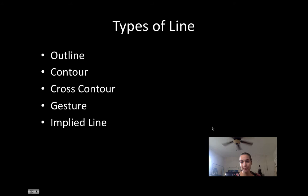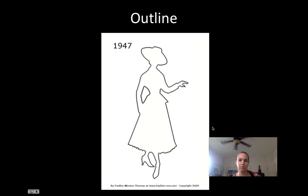There are different types of line: outline, contour line, cross contour line, gesture, and applied line. These aren't the only lines, but they are the main ones taught in a drawing class. An outline is simply the edge or space around something.